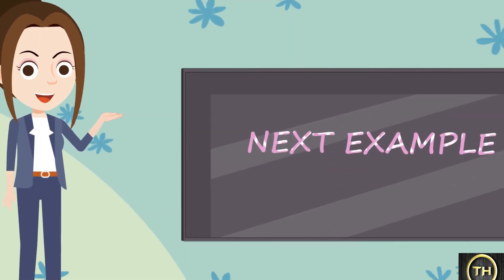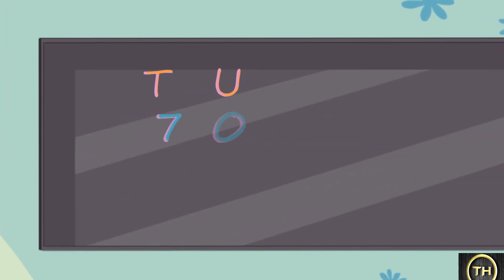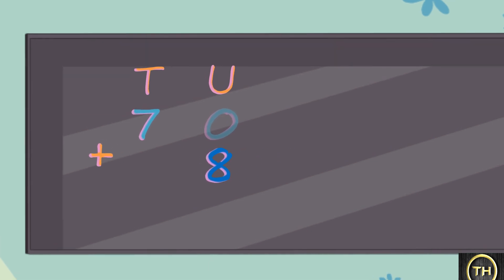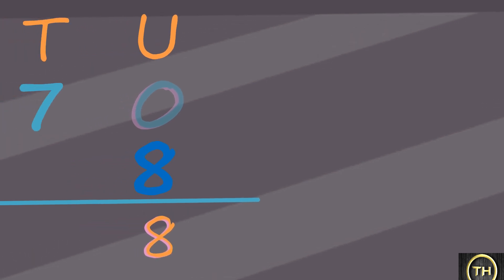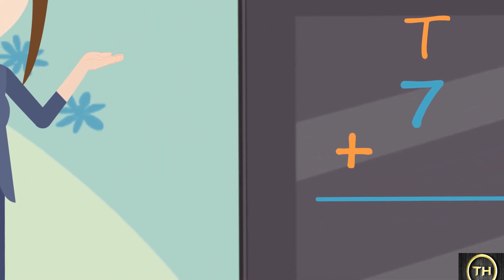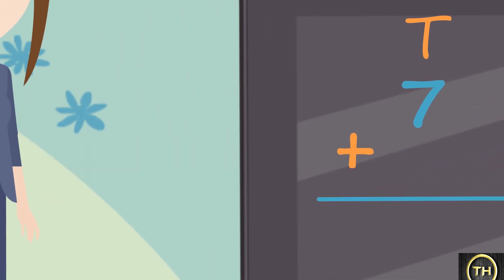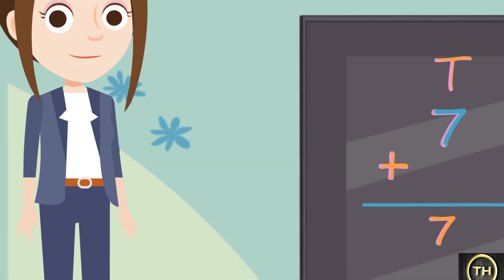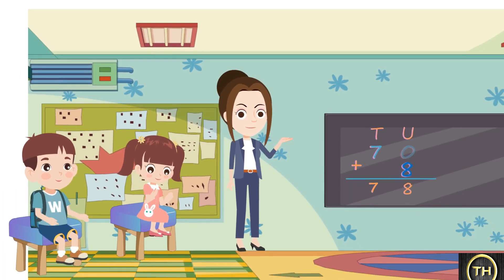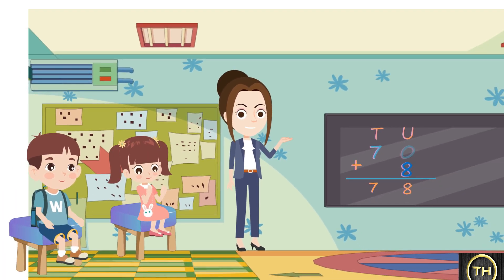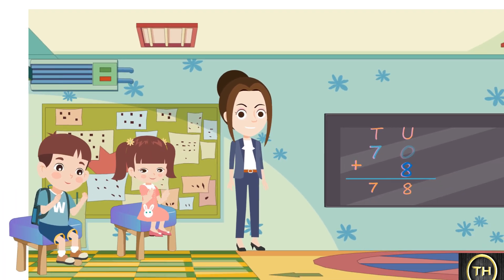Now we will see the next example: 70 plus 8. We begin the addition from the units place. 0 plus 8 is 8. Now from the tens place, we have only 7, so we write 7 as it is. So the answer is 78.